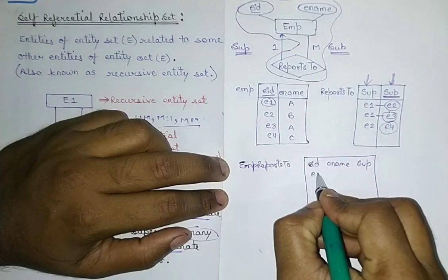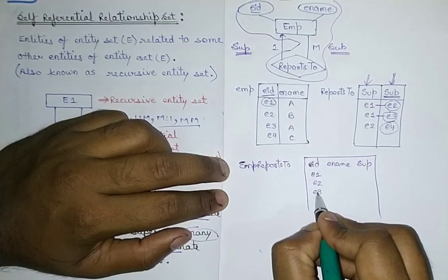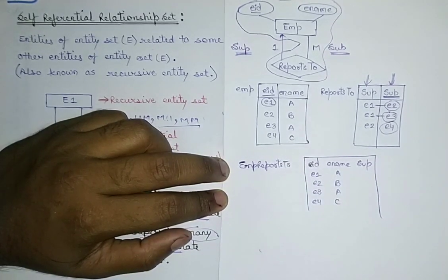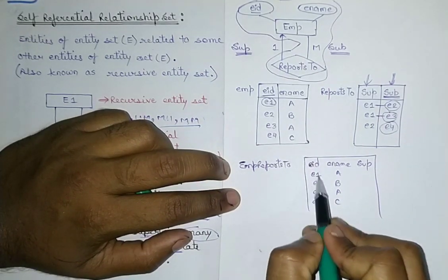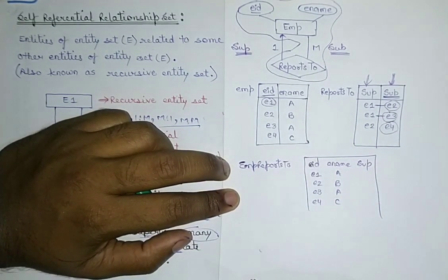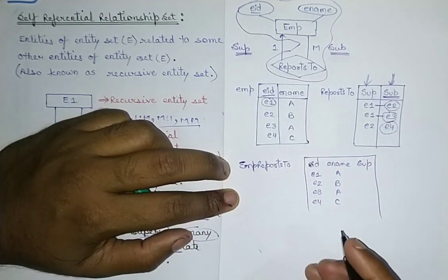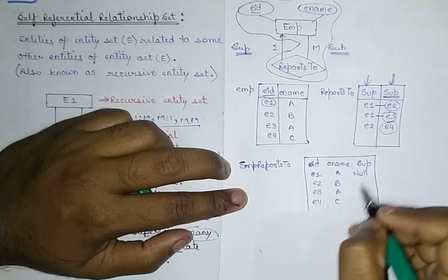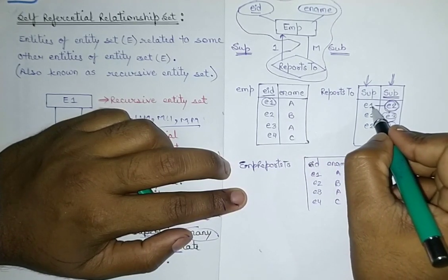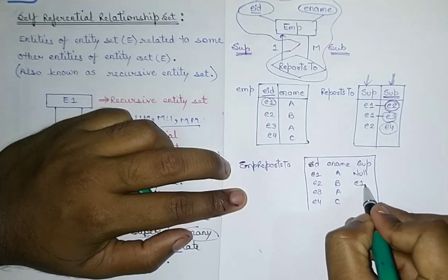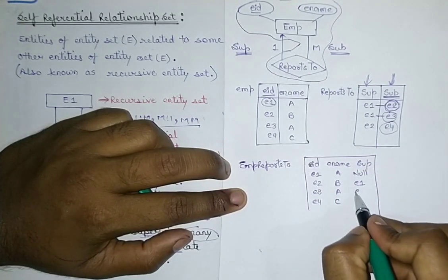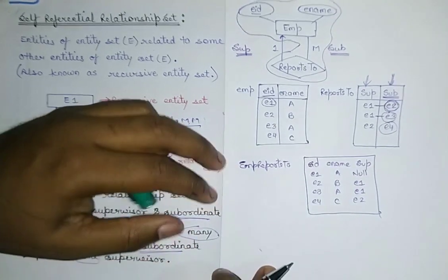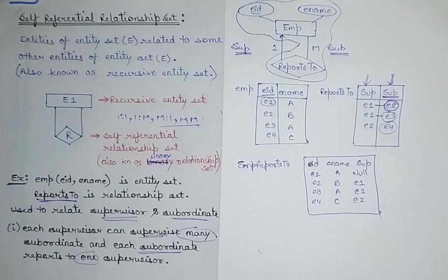The table has employee IDs E1, E2, E3, E4 and names A, B, A, C. E1 cannot be supervised by anyone — there is no supervisor for E1, so I write NULL. For E2, E1 is the supervisor, so I write E1. For E3, E1 is supervisor, and for E4, E2 is supervisor.